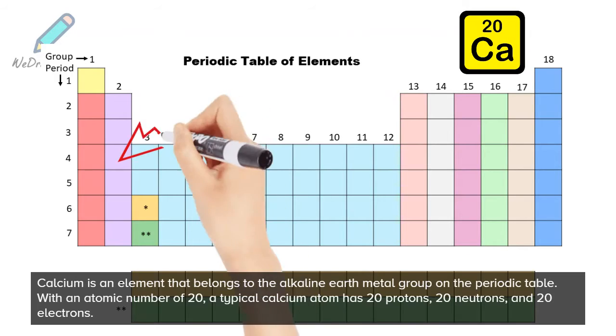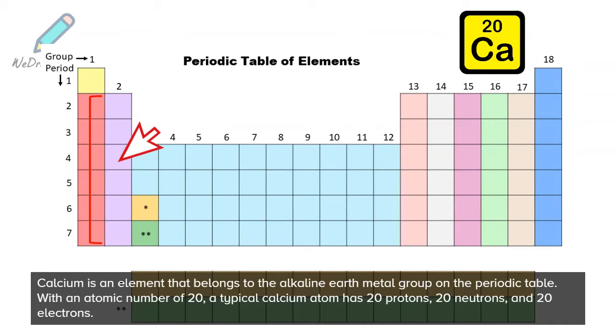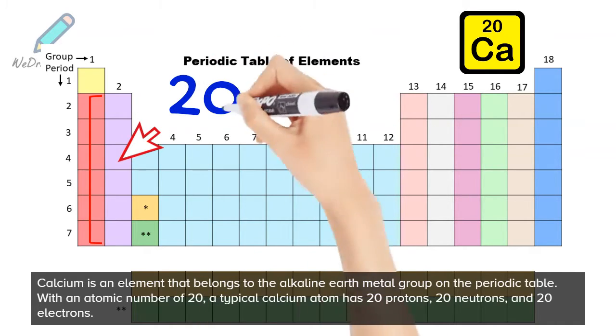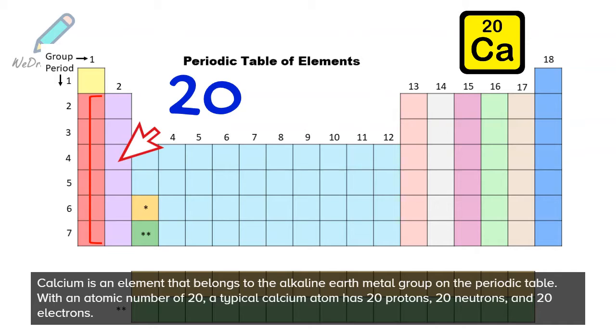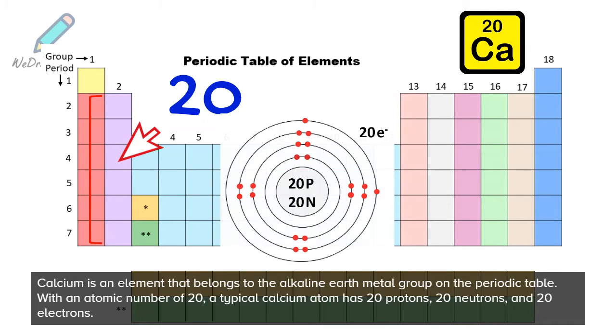Calcium is an element that belongs to the alkaline earth metal group on the periodic table. With an atomic number of 20, a typical calcium atom has 20 protons, 20 neutrons, and 20 electrons.